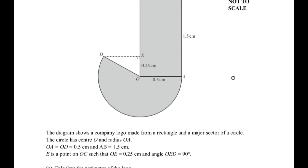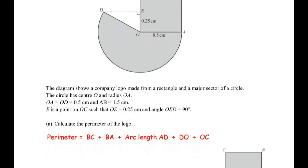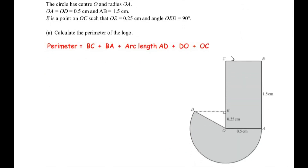We have to find the perimeter or the outline of the given logo, and we can clearly see that the logo is made up of a rectangle and a major sector. For the perimeter we are going to consider the outlines OC, BA, and the arc length AD along with side OD. The perimeter is given as BC plus BA plus arc length AD plus side OD plus OC.